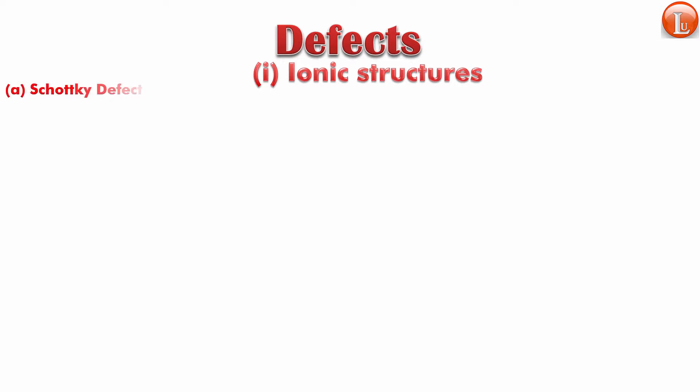First is the Schottky defect. Now remember this is again the missing thing. This is equivalent to the vacancy, only thing is a cation-anion pair is missing. Again when I say pair, what I mean to say is that is assuming the charge is equal. If the charges are not equal then appropriate amount of cation and anion pair are missing. Electron neutrality is maintained, and density definitely decreases in this case because atoms and ions are missing.